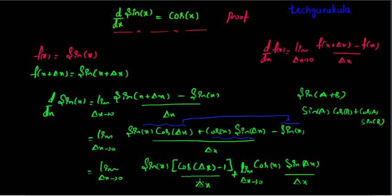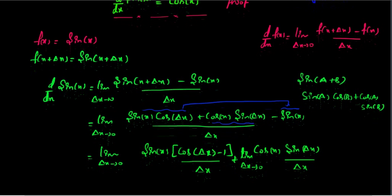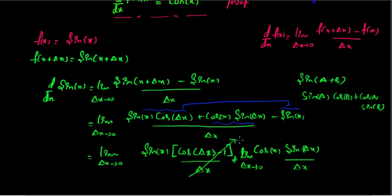We know that if you apply the limit here, this term — limit Δx tends to 0, cos of Δx minus 1 divided by Δx — is going to be 0.